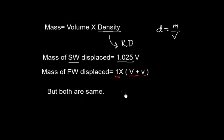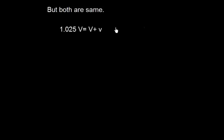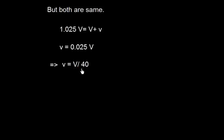Since we have not loaded or discharged anything, both masses are the same. This means 1.025 × capital V equals capital V plus small v. Simplifying this gives small v equals capital V divided by 40, because 1/40 equals 0.025.